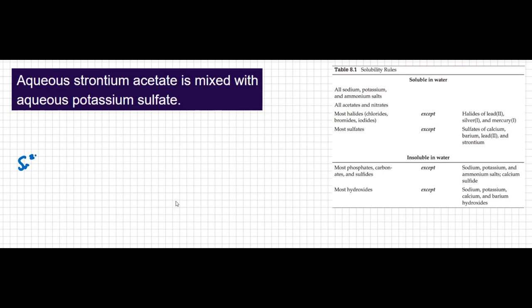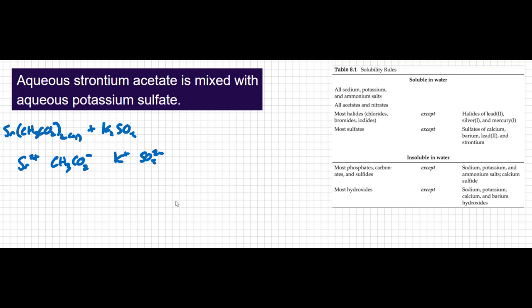Strontium is Sr with a 2+ charge, and acetate is CH₃CO₂ with a minus charge. So strontium acetate is Sr(CH₃CO₂)₂, and we're told that it's aqueous. Potassium is K⁺ and sulfate is SO₄²⁻, so potassium sulfate is K₂SO₄, and that's also aqueous. Here's our setup for a double replacement reaction.